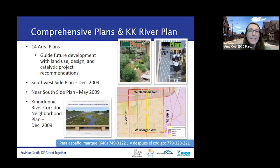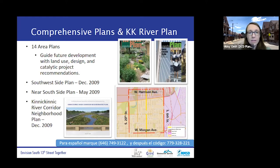The city is divided into 14 different comprehensive area plans that guide future development with land use design and catalytic project recommendations. The area for Envision South 13th Street Together is mostly within the southwest side area plan, but the northern portion also falls within the near south side plan. Also within this area is the Kinnickinnic River Corridor Neighborhood Plan, a combined effort from 16th Street Community Health Centers and MMSD in 2009. All of these plans help inform the Envision South 13th Street Together Plan.